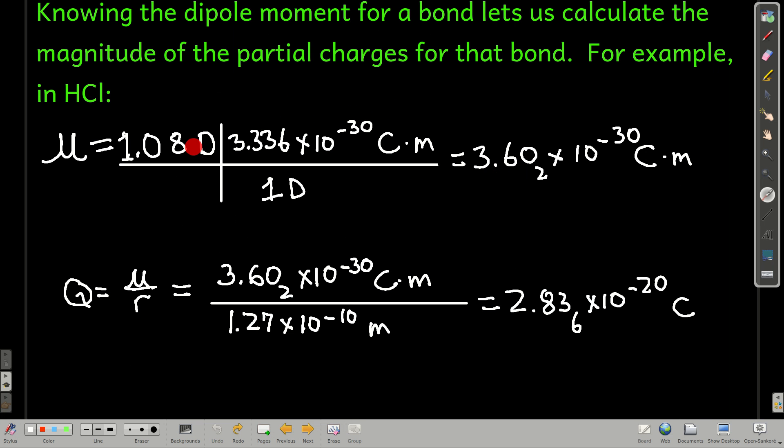So what we're going to do is we're going to change the dipole moment from units of Debye's to coulomb meters with this conversion. And we'll get this number here. Next, to calculate the magnitude of those charges, how big are the charges that are separated out in this molecule, we just rearrange the dipole moment equation, solve for Q. Here we know that we have the measured dipole moment now in coulomb meters. Remember the bond length we saw in that table is 1.27 angstroms. And remember, an angstrom is equal to 1 times 10 to the minus 10th meters.